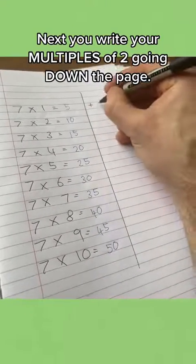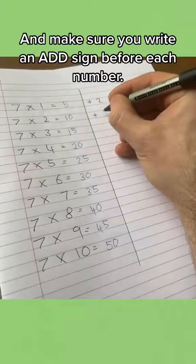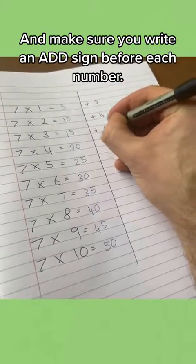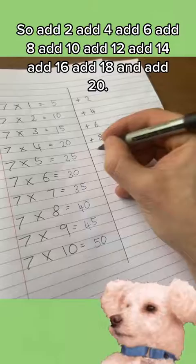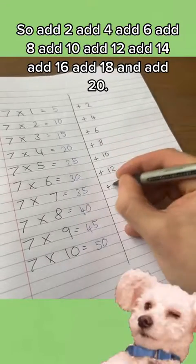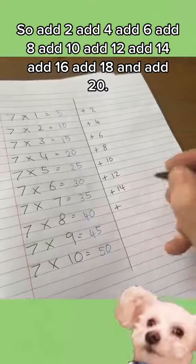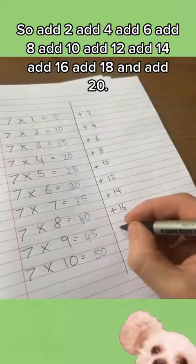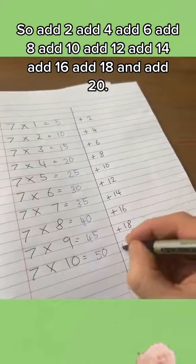Next, you write your multiples of 2 going down the page and make sure you write an add sign before each number. So, add 2, add 4, add 6, add 8, add 10, add 12, add 14, add 16, add 18 and add 20.